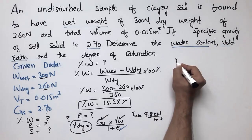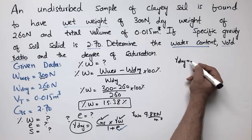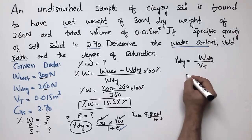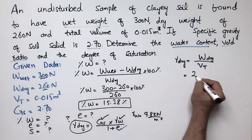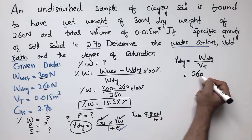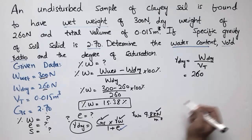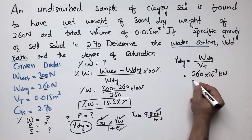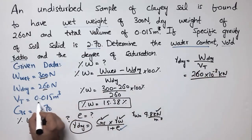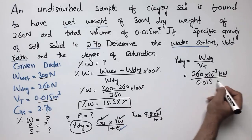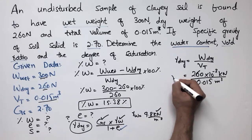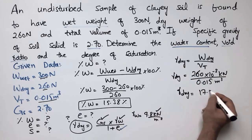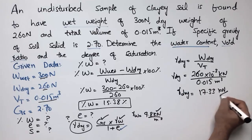To find γ_dry, we use: γ_dry = dry weight / total volume. The dry weight is 260 Newton, which we convert to 0.260 kN. The total volume is 0.015 cubic meters. So γ_dry = 0.260 / 0.015 = 17.33 kN/m³.